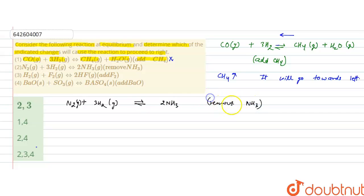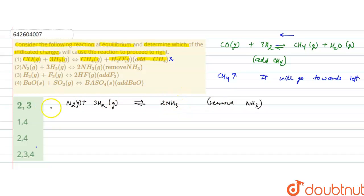If the ammonia is removed from this equilibrium, then according to Le Chatelier's principle, the equilibrium will shift to restore its normal state. It will tend to oppose this change and will form more ammonia by reacting nitrogen and hydrogen further. So ammonia will be formed more and the reaction will shift towards right — it will proceed to right.